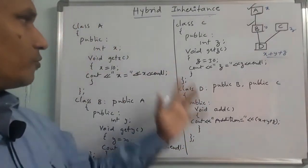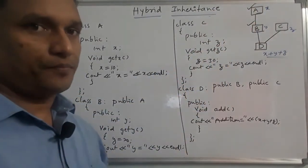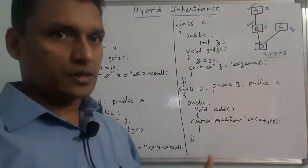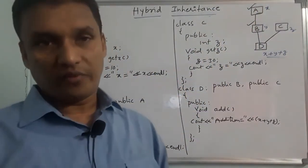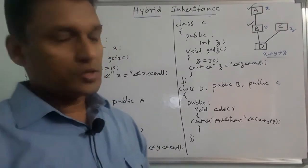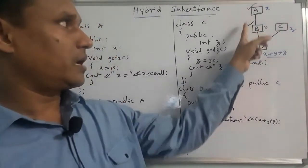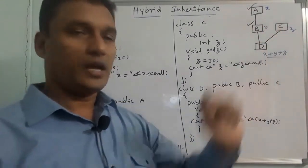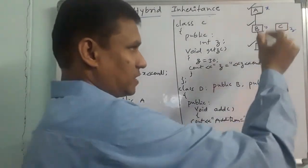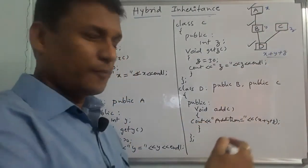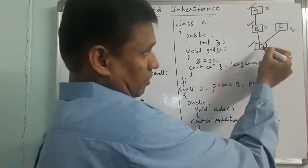In total, we have an implementation of this diagram. Next is the main function. Object creation: we create an object of class D, since D inherits from all classes A, B, and C.